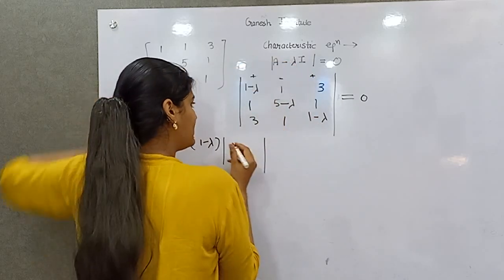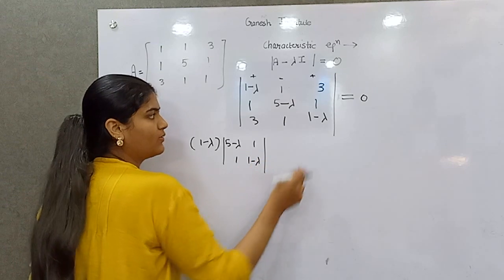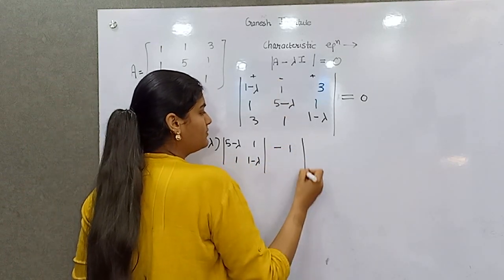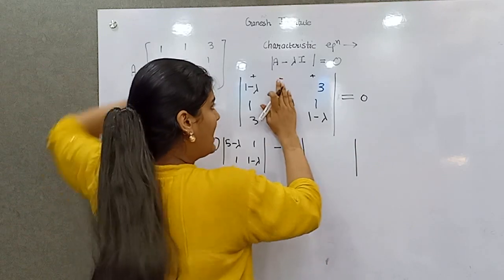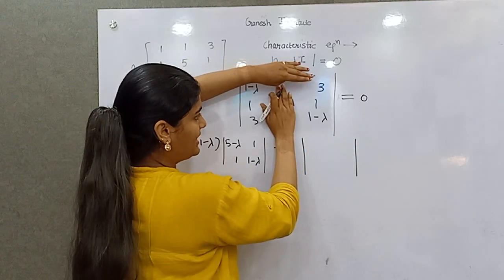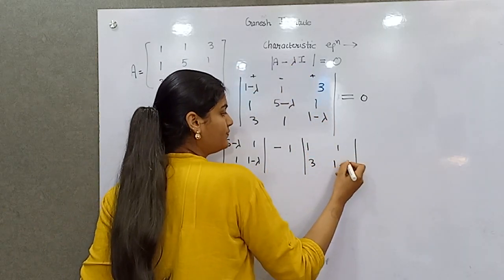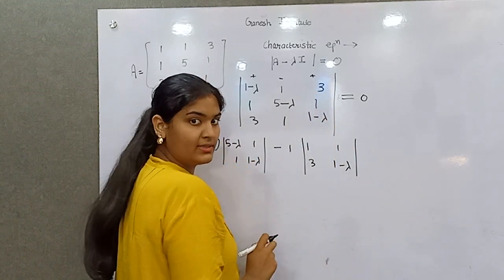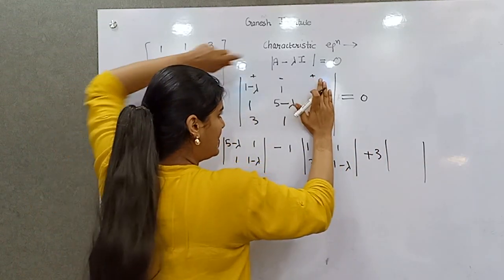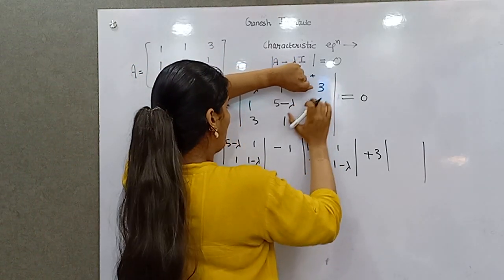Then minus sign of this term. Hide the row and column in which this element exists. Rest is 1, 3, 1, 1 minus lambda. Then plus 3 times determinant. Hide the row and column in which 3 exists.